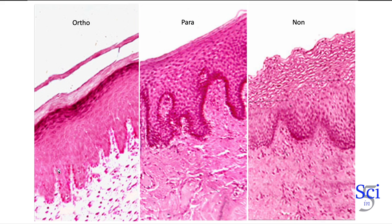Lastly, we have the stratum basale, which is the bottom layer where we have these interdigitating projections coming out. The stratum basale is going to have a turnover of cells — it's the area that has fast healing. The cells undergo their divisions, pass on, and start over again. The stratum spinosum, on the other hand, is this prickly layer.